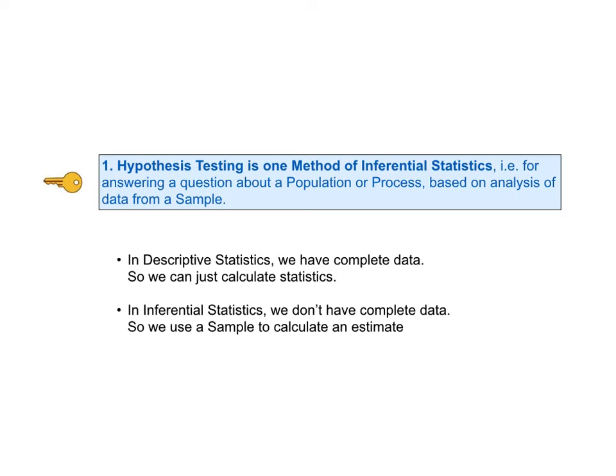Instead, we take a sample of data and calculate a value for a property of the sample — say the sample mean — and we use that to infer or estimate the corresponding property in the population or process, which would be the population or process mean. But we usually also want to know how good this estimate is — how much confidence we can have in its accuracy. So we use an accepted method for inferential statistics, usually hypothesis testing or confidence intervals.